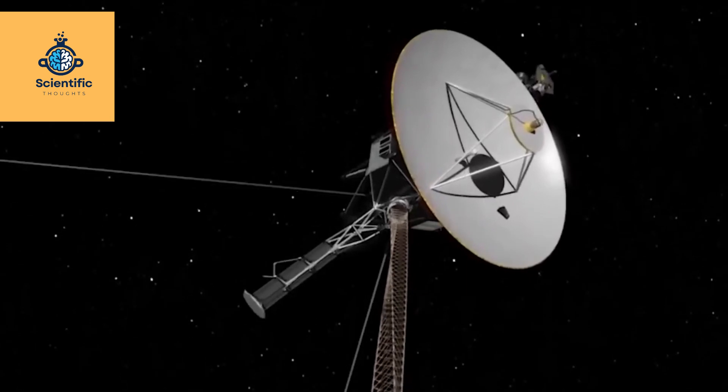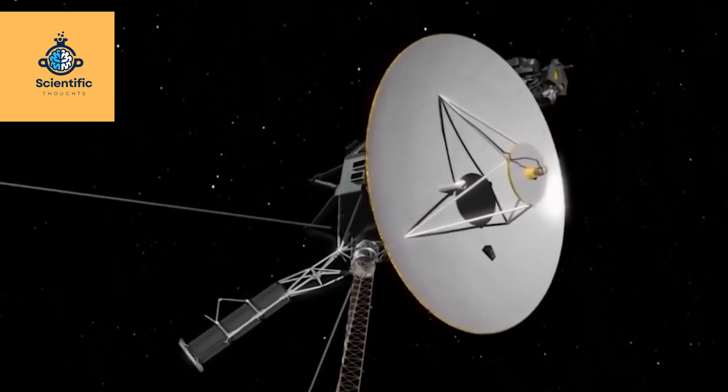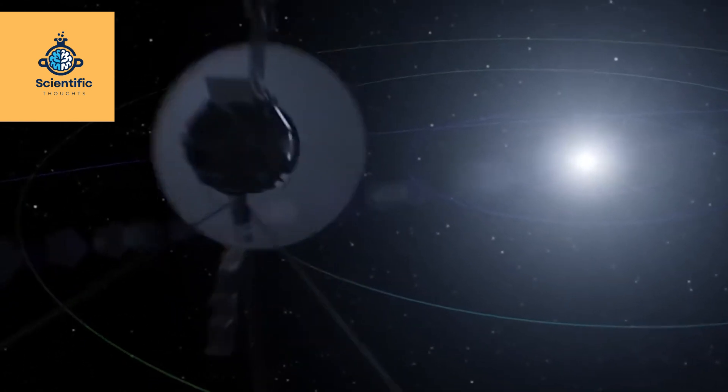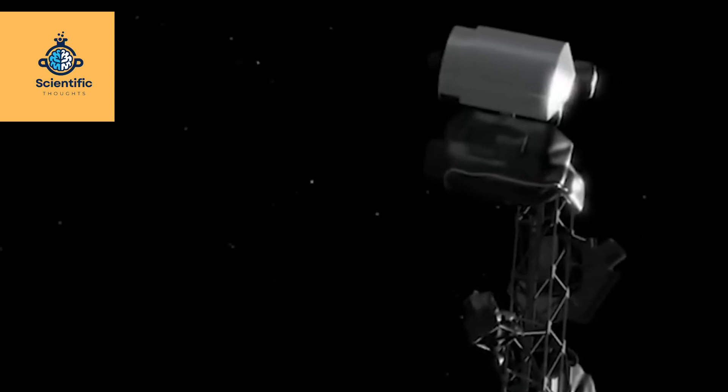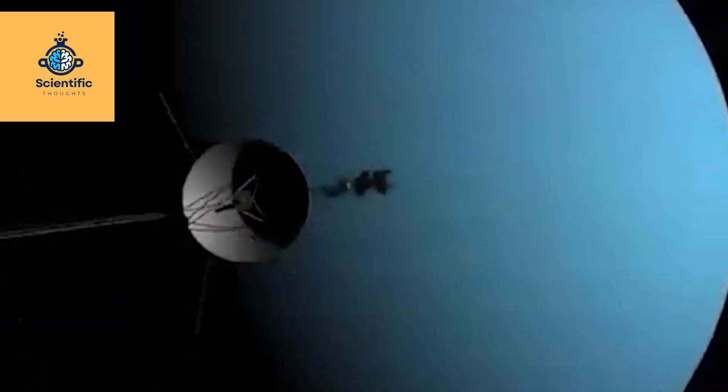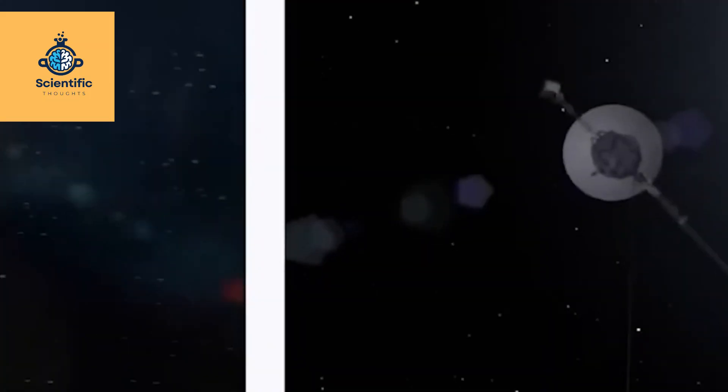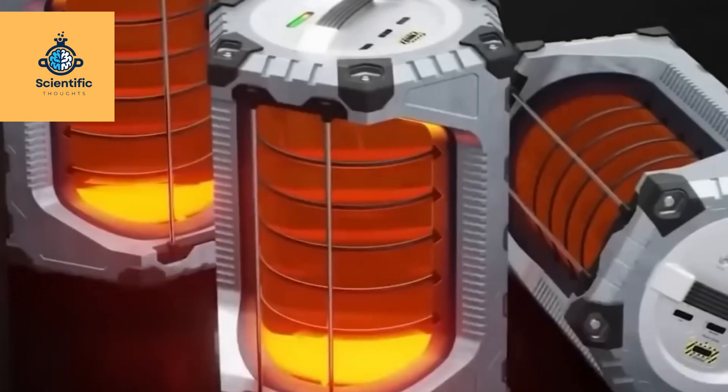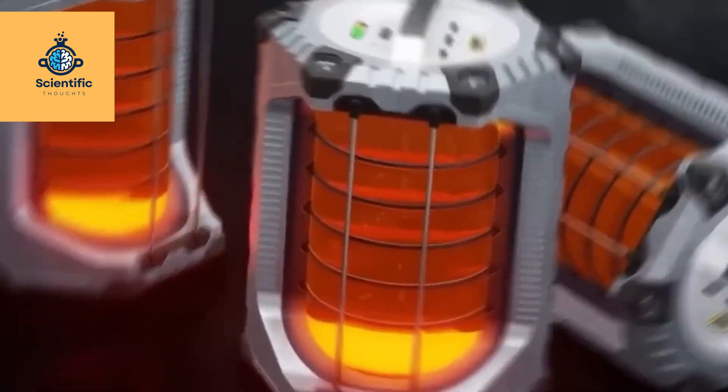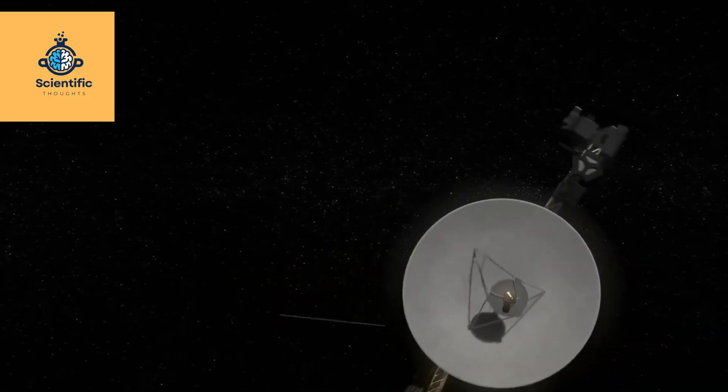Uranus's moon Ariel, where mystery and beauty collide in a symphony of geological diversity, was revealed through the lens of Voyager 2 in 1986. Explore Ariel's surface, adorned with craters, valleys, and ridges, each telling a story of ancient encounters and tectonic forces shaping the moon's landscape. Voyager 2's timeless encounter with Ariel invites us to appreciate the intricacies of this celestial body, a jewel in the vast expanse of Uranus's lunar tapestry.